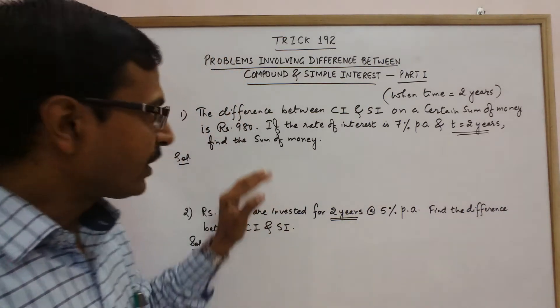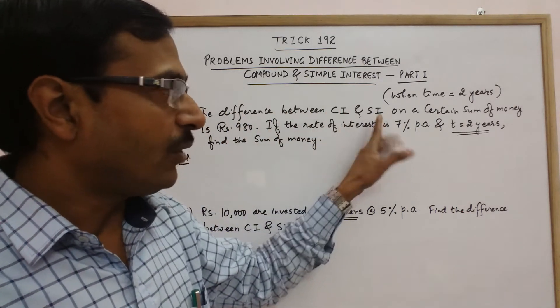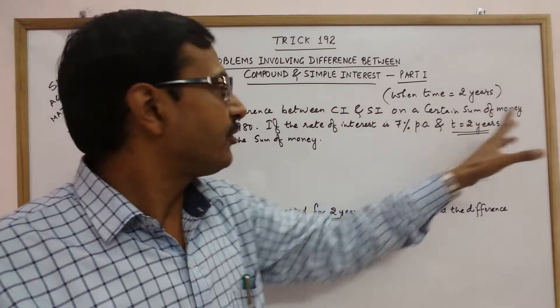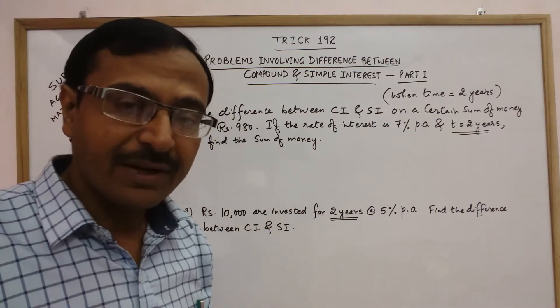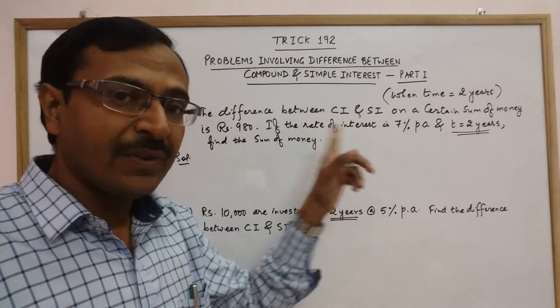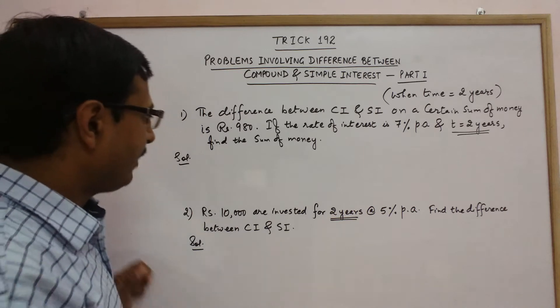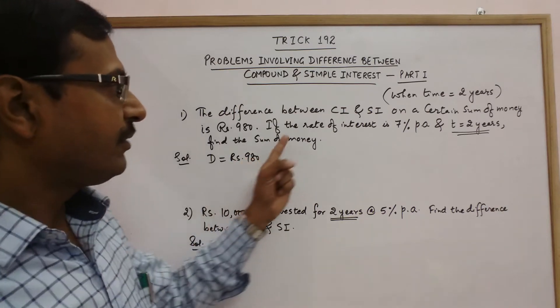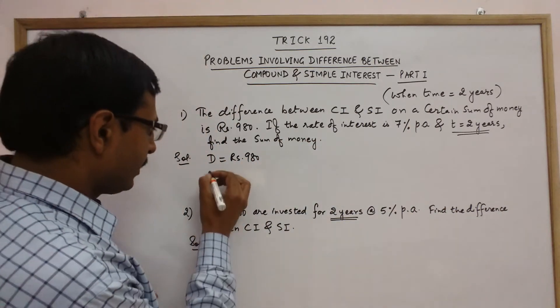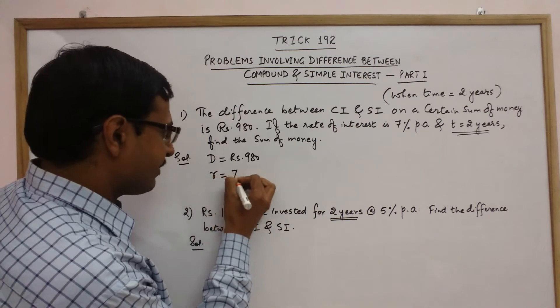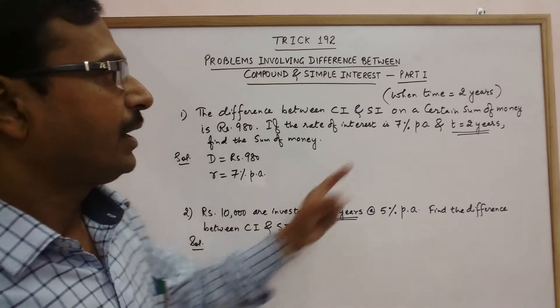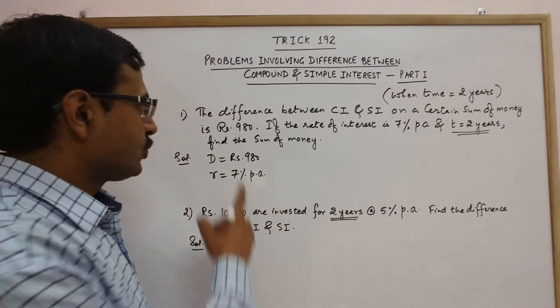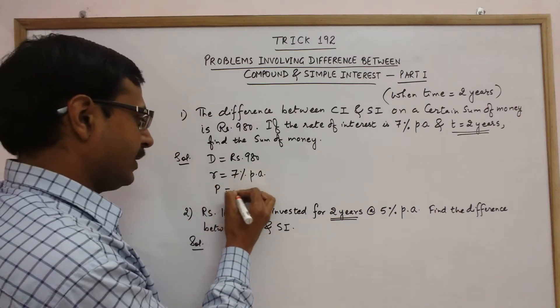The first problem is: the difference between CI and SI, obviously the compound interest is more than simple interest, on a certain sum of money is rupees 980. So here we are given that the difference between the CI and SI is 980. I will call this difference as D. If the rate of interest is 7% per annum, so R is 7% per annum, and time is obviously two years, we need to find the sum of money, that is we need to find the principal P.